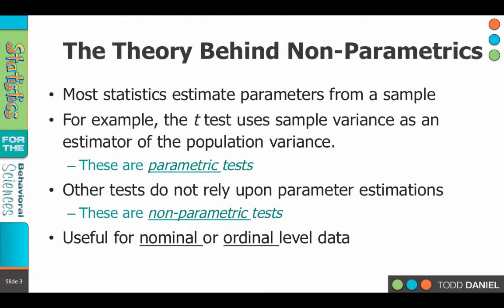How do we do comparisons with that? Well, we have options with non-parametric statistics that do not require us to have parametric assumptions. Most statistics estimate parameters from the sample — we would do a sample and use the value of the standard deviation from the sample to estimate the value of the standard deviation in the population. Now we're going to use a different type of test, not like a t-test which relies upon assumptions about the population, but rather a test that does not rely upon parametric assumptions.